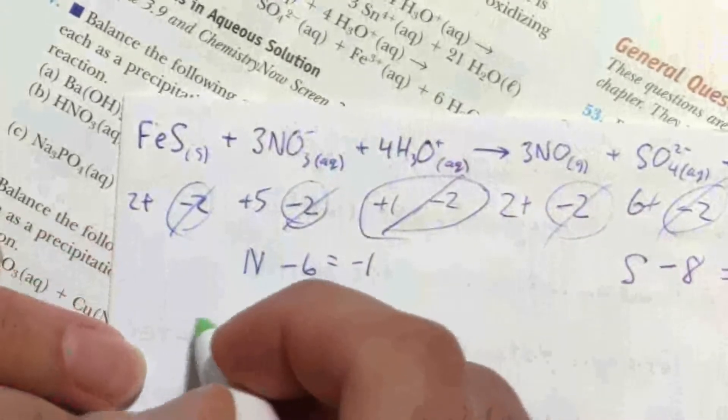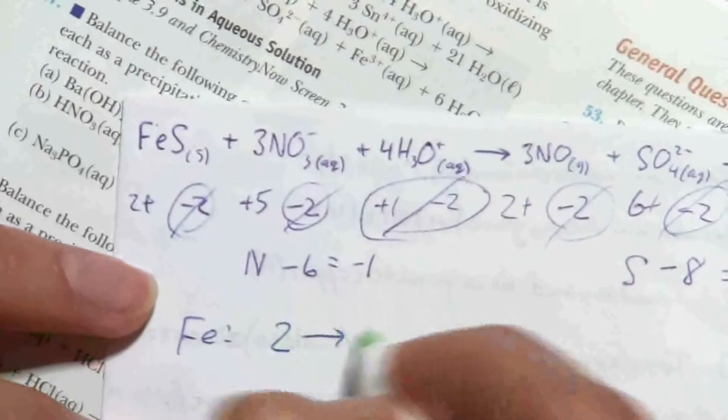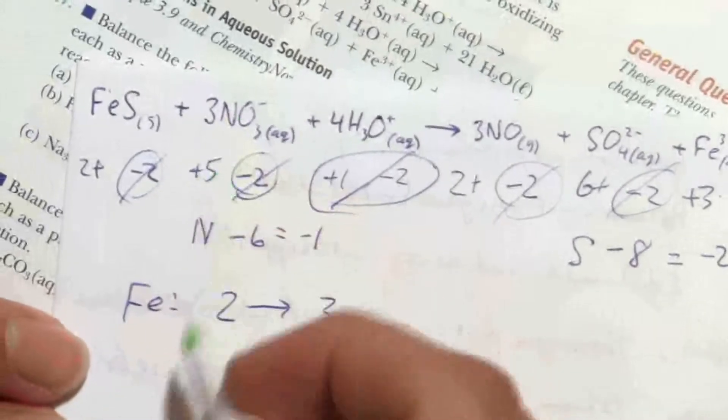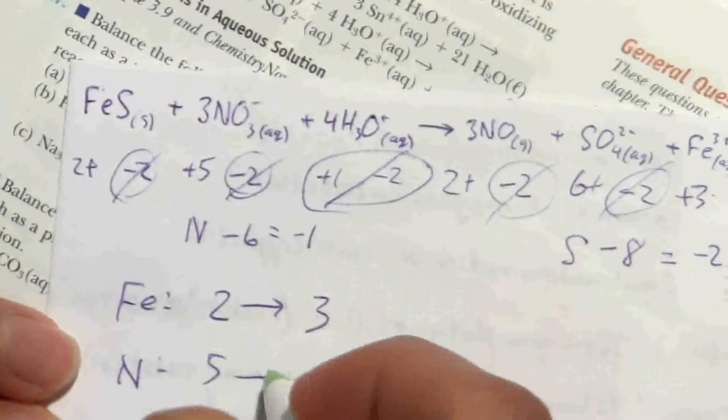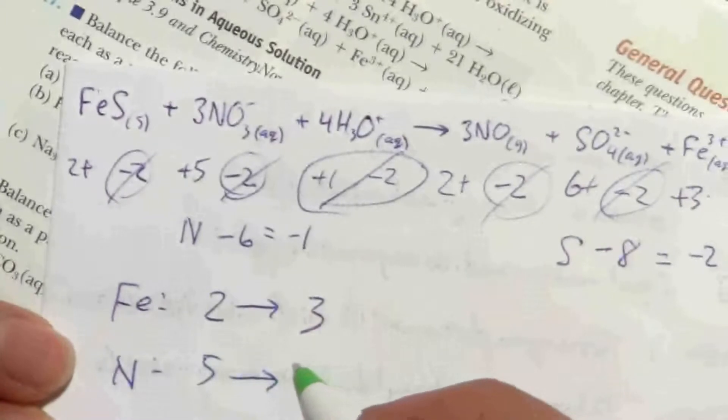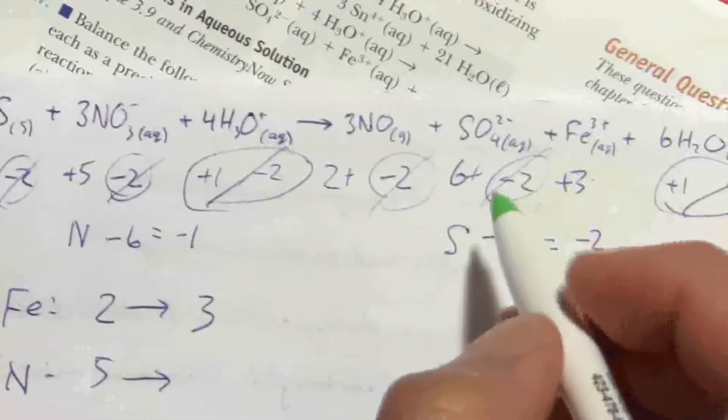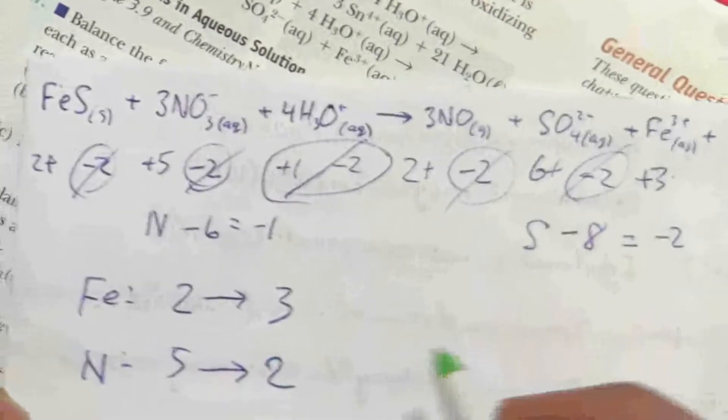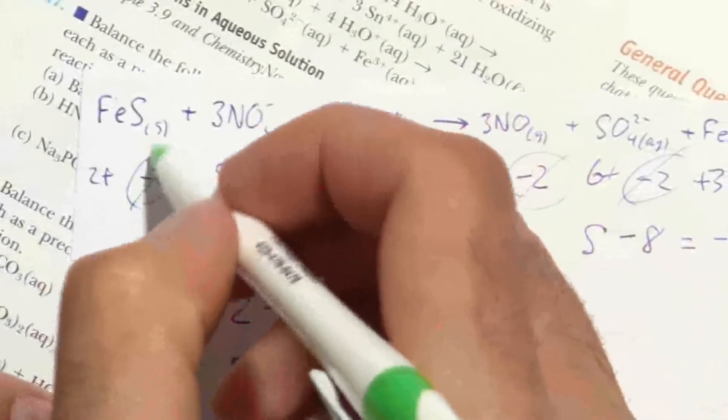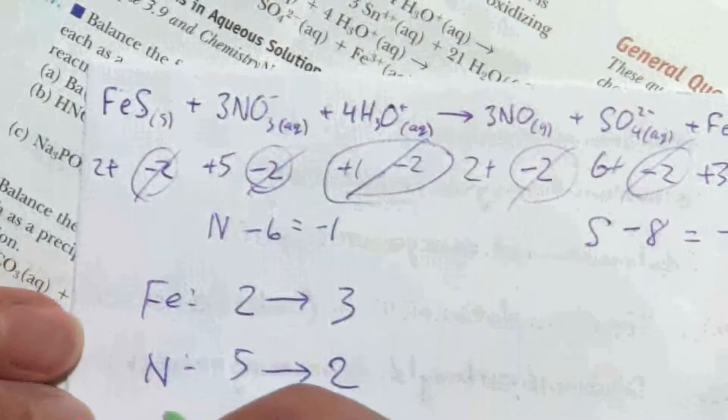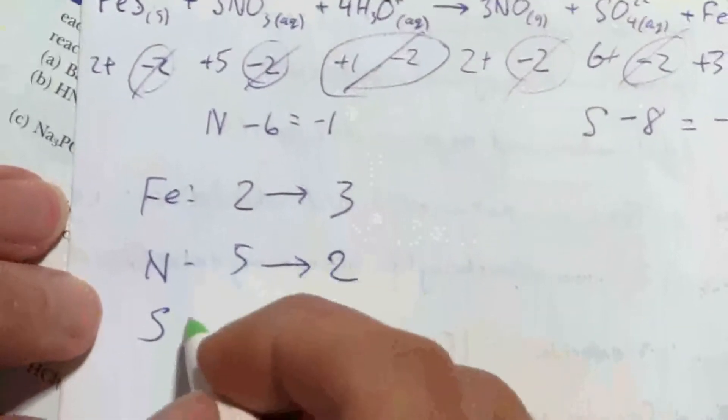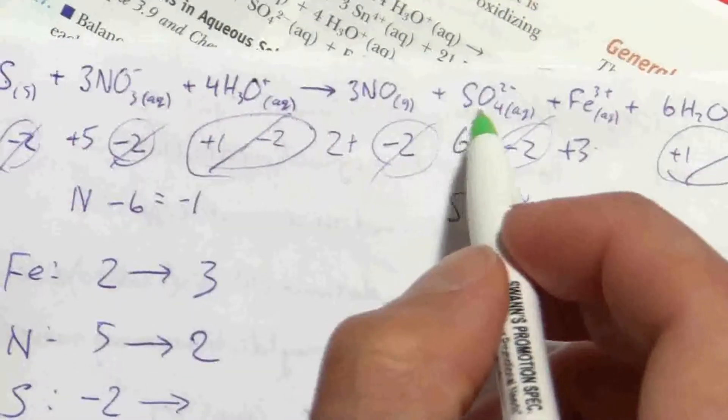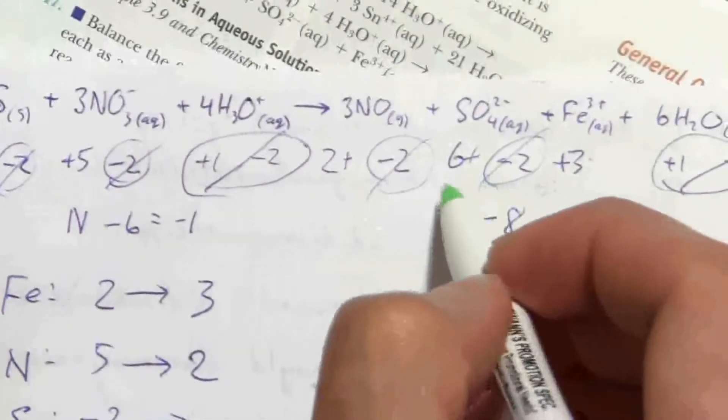So, I have iron is going from two to what is iron over here? Three. And then nitrogen is going from five to, where's nitrogen? Over here, positive two. Now, I accidentally took out this negative two. That one was sulfur. Let's go ahead and put that one in there because it also changes. It goes from a negative two to sulfur over here. We found was a positive six.